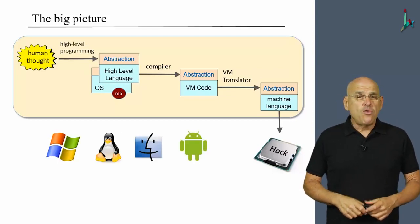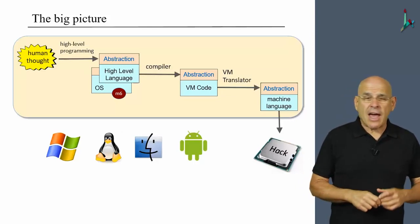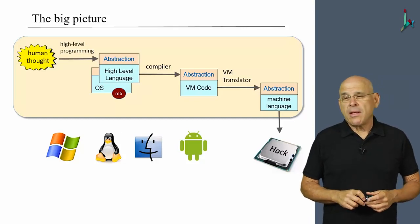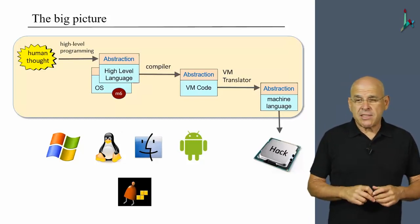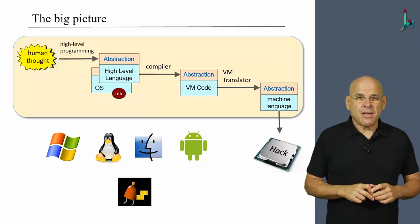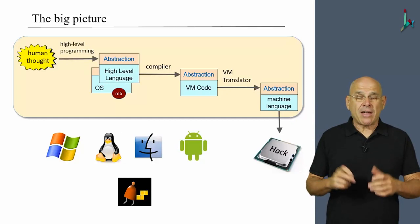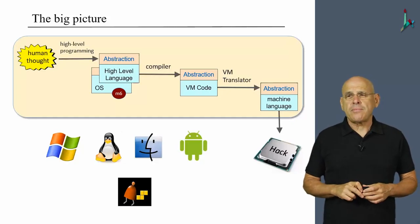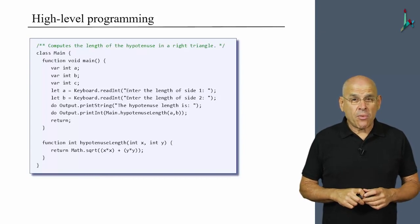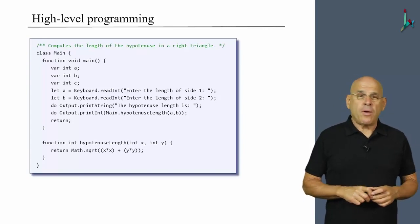There are numerous operating systems out there, and here are the icons of those that are better known. And here is another operating system which is less known — the Jack operating system — and that's the one we are going to develop in this module. Now why do we need operating systems to begin with? Take a look at this piece of high-level code written in Jack.